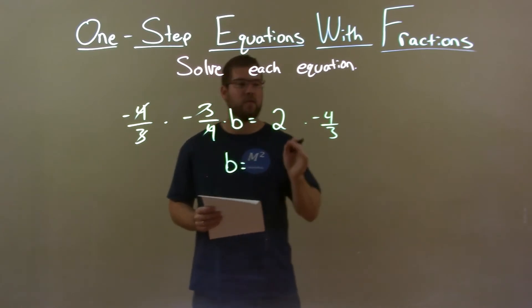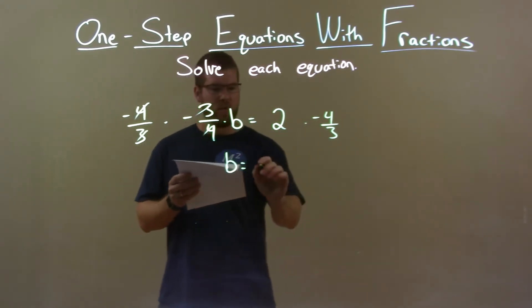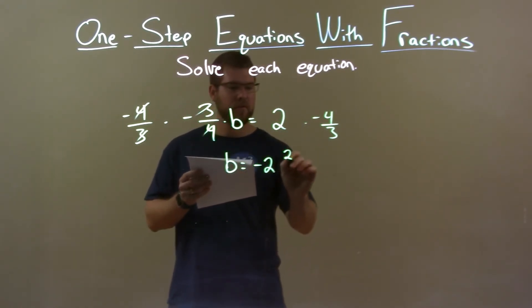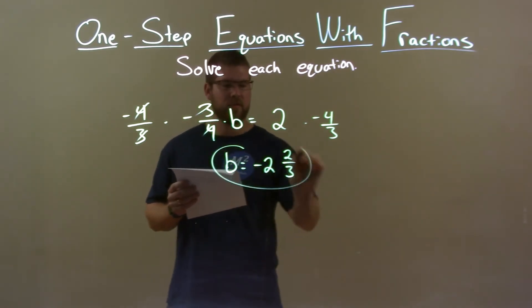Now, 2 times a negative 4 thirds. When we simplify that, we get a negative 2 and 2 thirds. And there is our final answer.